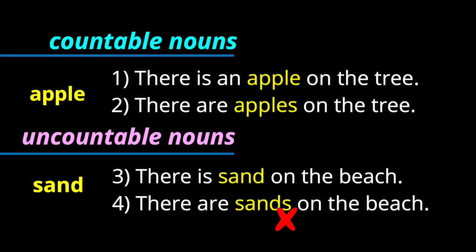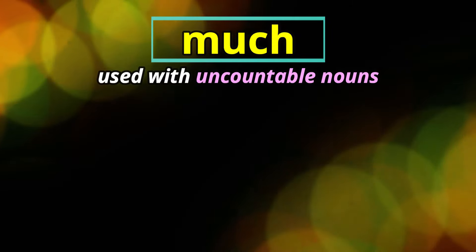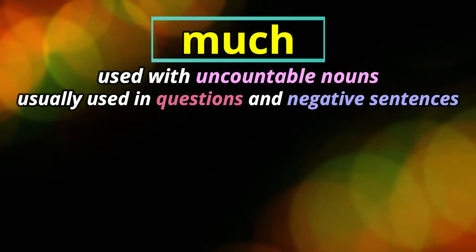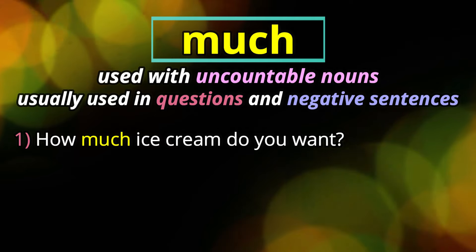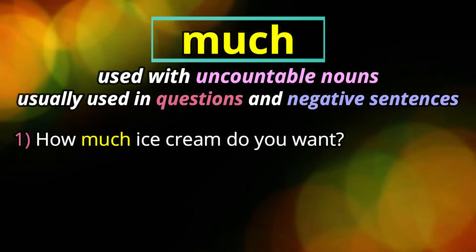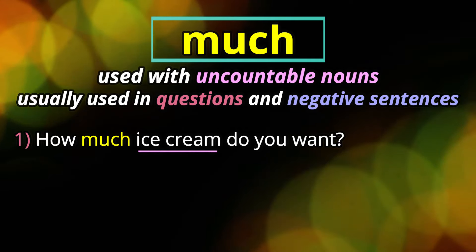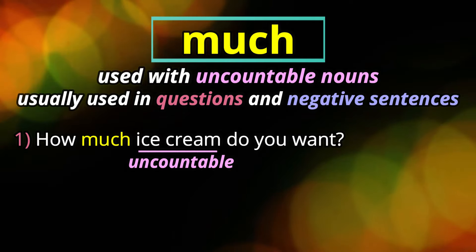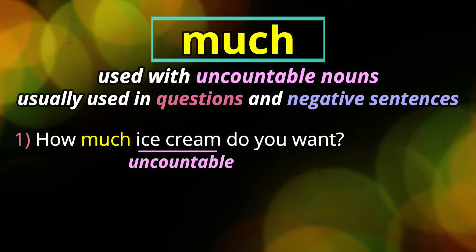The first quantifier we're going to look at is much. Much is used to determine the quantity of uncountable nouns, and it's usually used in questions and in negative sentences. Let's look at the first example: how much ice cream do you want? Here, much is describing or determining the amount of ice cream. Ice cream is an uncountable noun so we use much — we can't count ice cream. It's one of those mass nouns where a group is counted as a group.